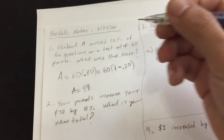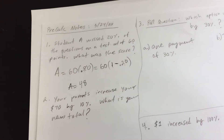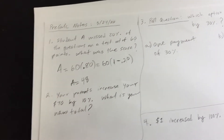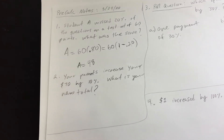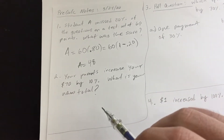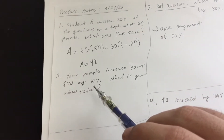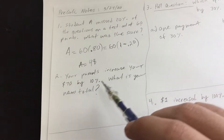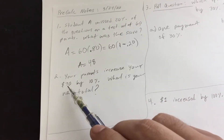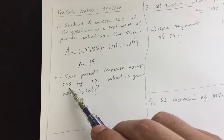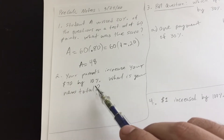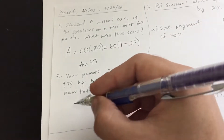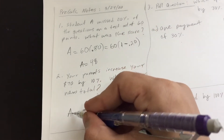The student's score on that 60-point test is 48. Next problem, which is more like what most of our problems today will look like — regarding money. Your parents increase your original amount of $70 by 10%. What is your new total? Again, think like the previous problem.